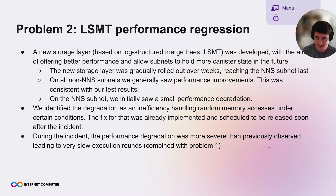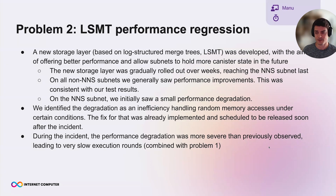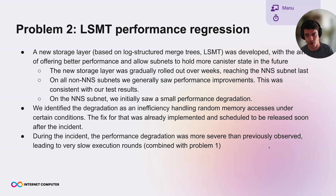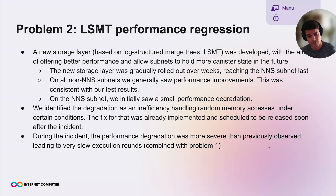The regression was noticed, but the assessment was that it wasn't too bad and we could wait for the next release with performance improvements. But during the incident there was a particular load pattern where the regression was much worse than previously observed. Together with the first problem — which allows a lot of work to be scheduled in one execution round — this led to very, very slow execution rounds.